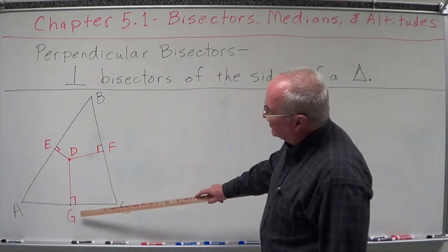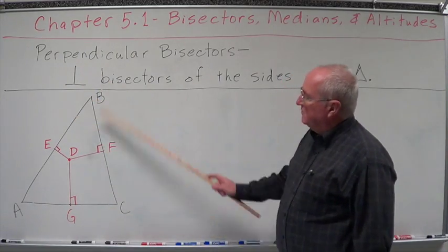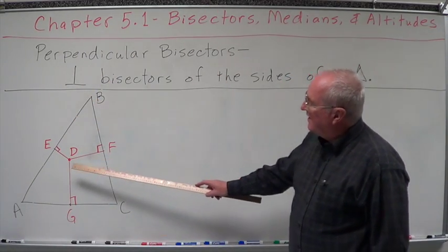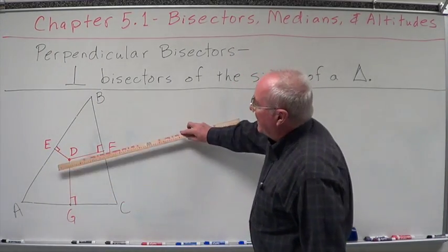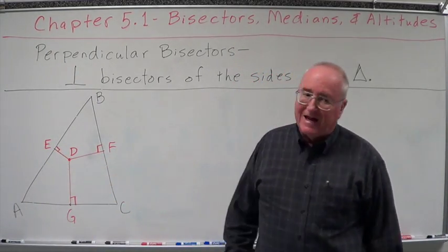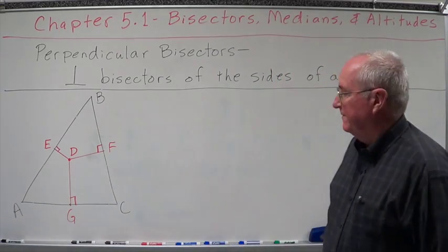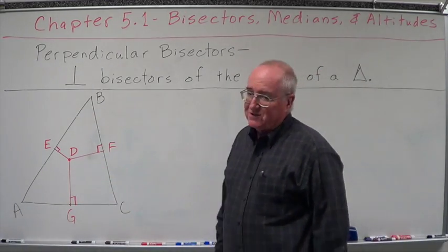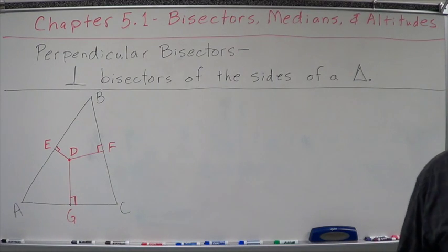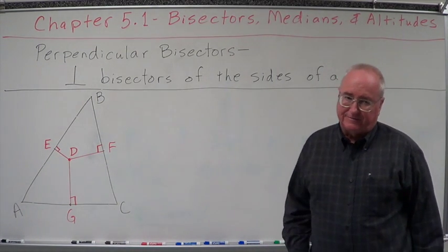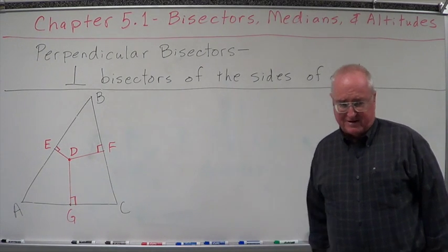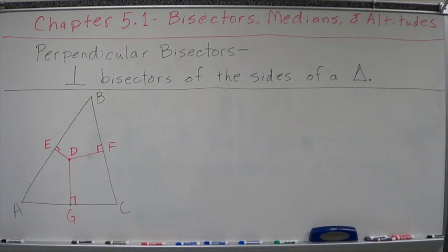We have line segment DG, which if we were to continue it would be line DG. We have line segment DE, which would be line DE, and we have line segment DF, which could be line DF. Those three lines intersect at one point. Now, interesting things about what we're going to do in this triangle — everything we're talking about is going to intersect at one point, so all of these things are going to be concurrent.